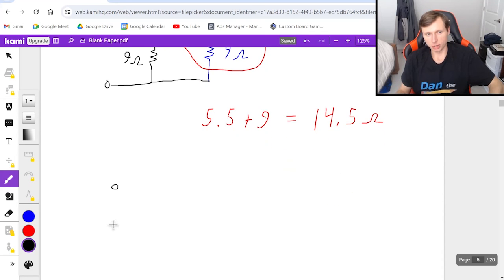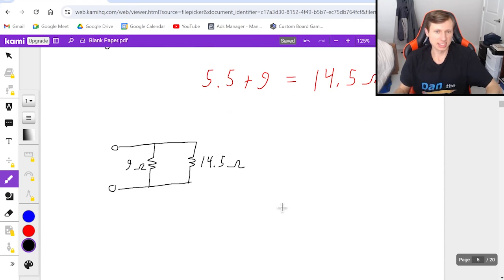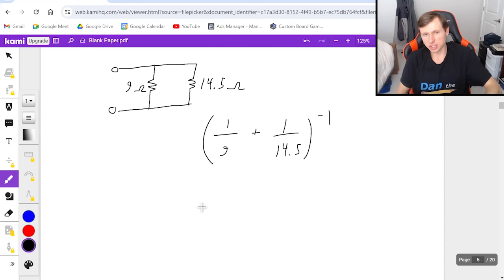Redrawing the circuit with that, 9 ohms here, and then 14.5 ohms there. These two are in parallel, obviously. So then all I got to do is 1 over 9 plus 1 over 14.5, and raise that to the negative first power. And with that, we'll get a final answer of 5.6 ohms.